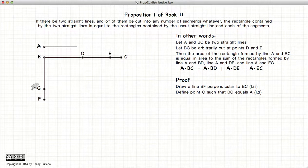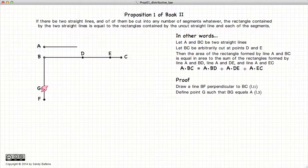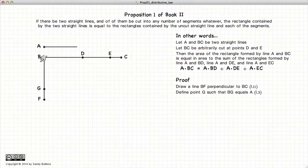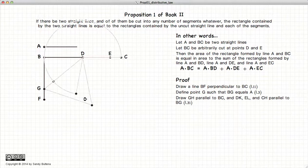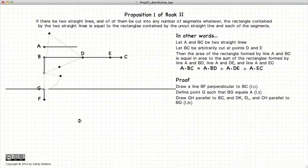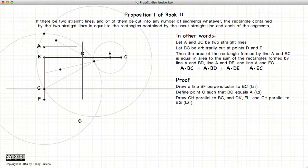The next thing we're going to do is draw a whole bunch of parallel lines, so we'll draw a line from G parallel to BC. We'll draw a line from D, E, and C parallel to BG, ending up with a whole bunch of rectangles.